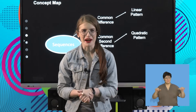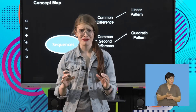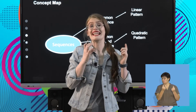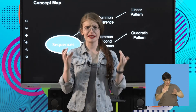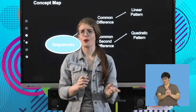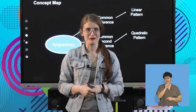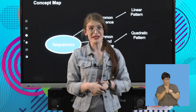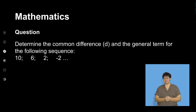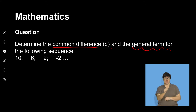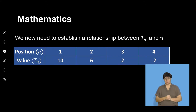Welcome back everyone. Just before the break, we defined common difference. Now I'm going to take that definition and the fact that it's a property of a linear pattern, and we're going to first look at an example before defining what a quadratic pattern is. So let's have a look at our linear pattern example. The question says: determine the common difference and the general term for the following sequence.